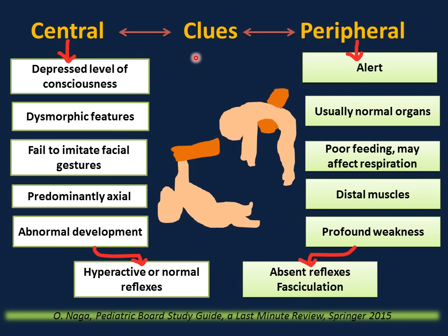The first and most important question to ask when we have an infant with hypotonia or a floppy infant is: is it central or peripheral? Clues to central causes of hypotonia include depressed level of consciousness, dysmorphic features commonly associated with syndromes, failure to imitate facial gestures, predominantly axial weakness, and abnormal development or delayed milestones. On physical exam, reflexes in central causes will be hyperactive or normal.